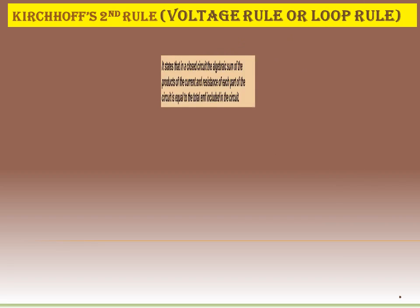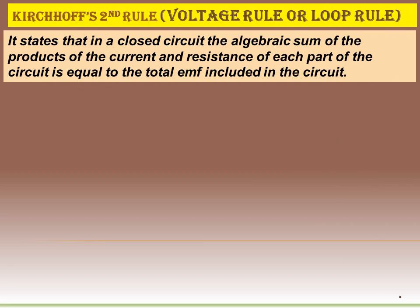Now let's see Kirchhoff's second rule, which is called the voltage rule or loop rule. It states that in a closed circuit, the algebraic sum of the products of the current and resistance of each part of the circuit is equal to the total EMF included in the circuit.